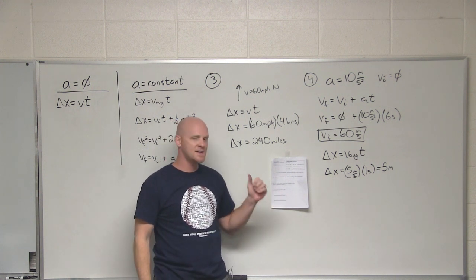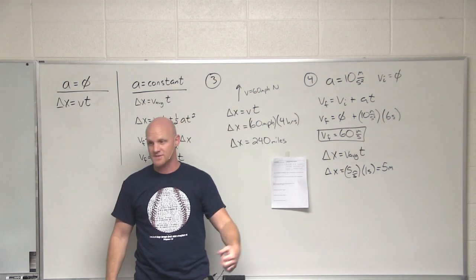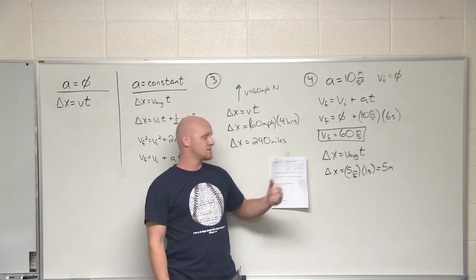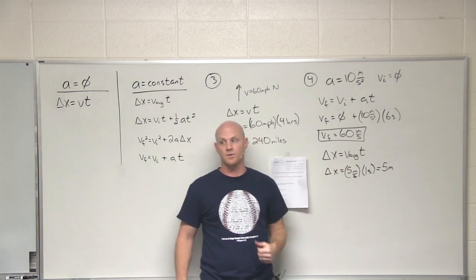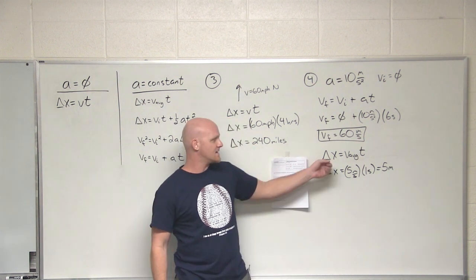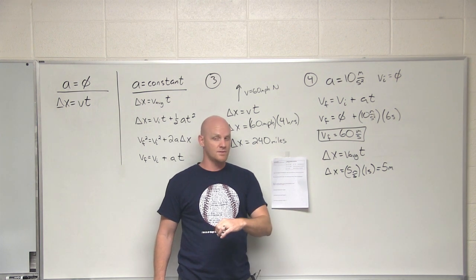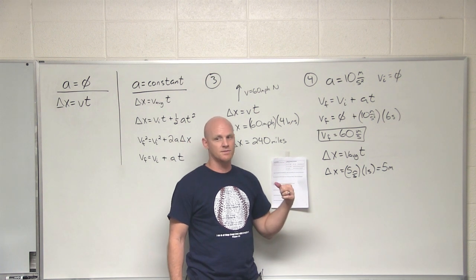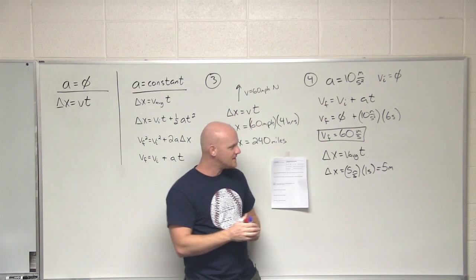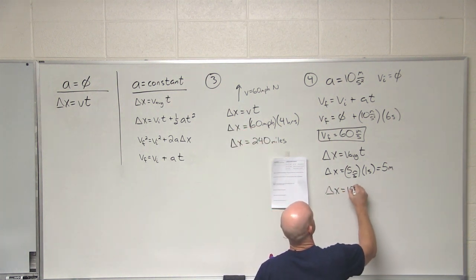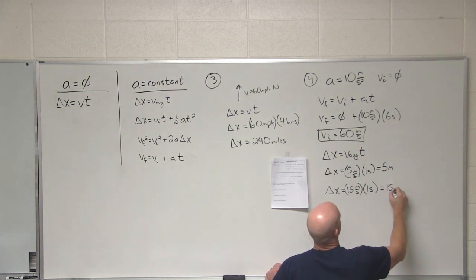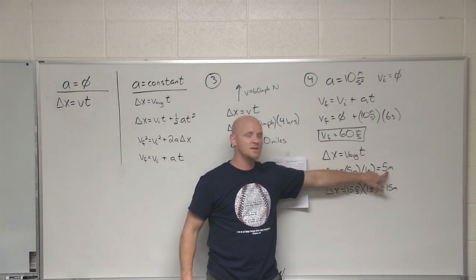How far does it travel in the second second — not in two seconds total, but only during the second second, from t equals one to t equals two seconds? Using Δx equals V_average times t: at t equals one second, velocity is 10 m/s; at t equals two seconds, velocity is 20 m/s. The average is 15 m/s, and the time interval is one second, so we've traveled 15 meters. It makes sense we've traveled further in the second second than in the first, because we're speeding up with positive acceleration.